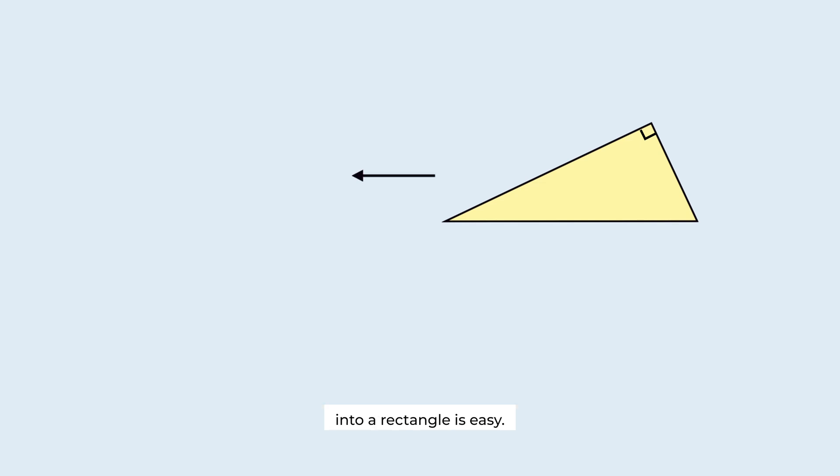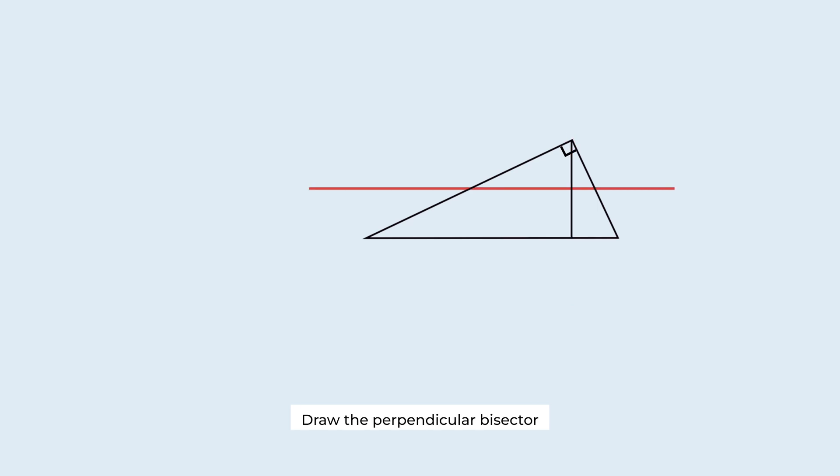Converting this right triangle into a rectangle is easy. Draw a perpendicular line passing through this point. Draw the perpendicular bisector of this segment. This part is congruent to this part. This part is also congruent to this part. The area of the right triangle is equal to the area of this rectangle.